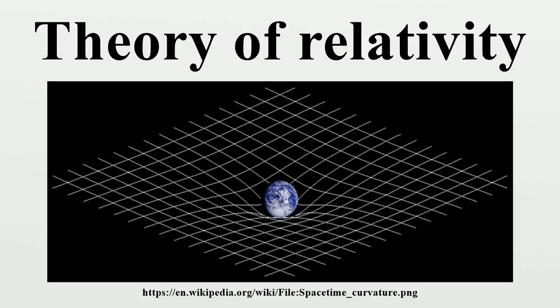Some of the consequences of general relativity are: clocks run slower in deeper gravitational wells - this is called gravitational time dilation. Orbits precess in a way unexpected in Newton's theory of gravity. Rays of light bend in the presence of a gravitational field. Rotating masses drag along the spacetime around them, a phenomenon termed frame-dragging. The universe is expanding, and the far parts of it are moving away from us faster than the speed of light. Technically, general relativity is a theory of gravitation whose defining feature is its use of the Einstein field equations. The solutions of the field equations are metric tensors which define the topology of the spacetime and how objects move inertially.